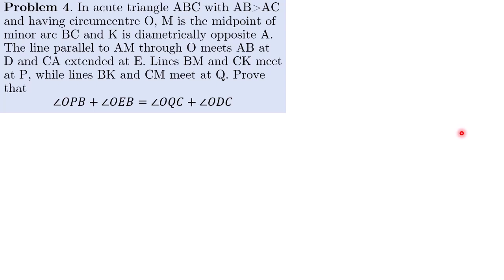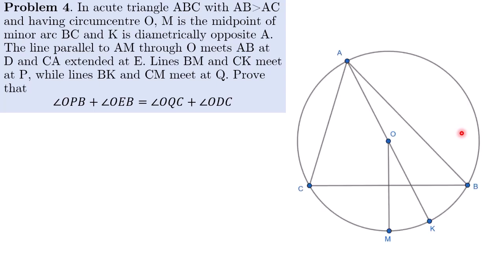In this video, we will take a look at problem 4 which is a geometry problem. So for this problem, we have an acute triangle ABC with length AB bigger than AC and the triangle has circumcenter O.